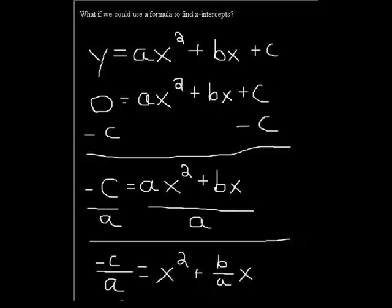Complete the square. Absolutely. So, we're going to set y equal to zero. And we've got to get rid of the C term. We're going to subtract C from both sides. That's going to give us negative C is equal to Ax squared plus Bx. Is everybody with me so far?